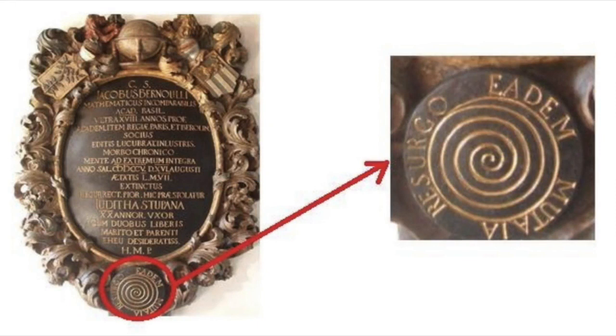The logarithmic spiral was first described by René Descartes and later studied in depth by Jacob Bernoulli, who called it Spiralis Mirabilis, the wonderful spiral, and wanted one engraved on his tombstone. He did get a spiral, but unfortunately it was a rather crudely cut Archimedean type. Accompanying it is the inscription, Eadem Mutata Resurgo. Although changed, I shall arise the same.